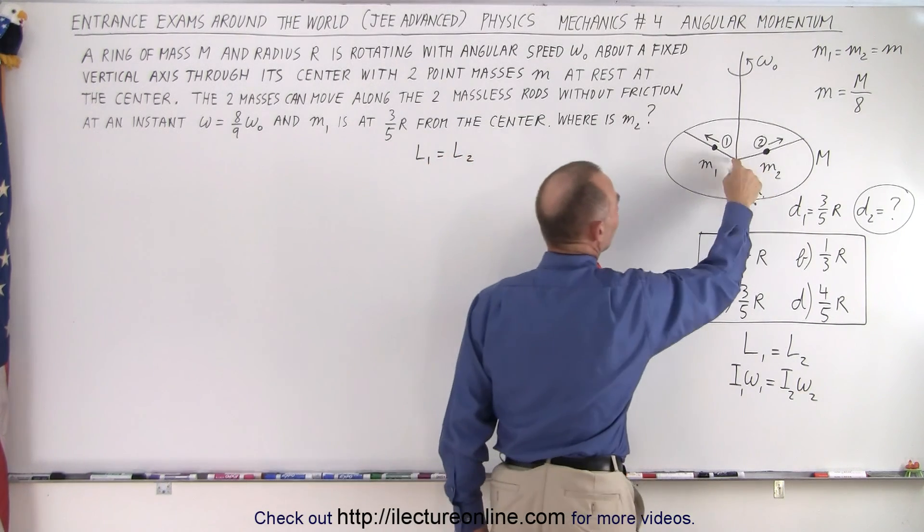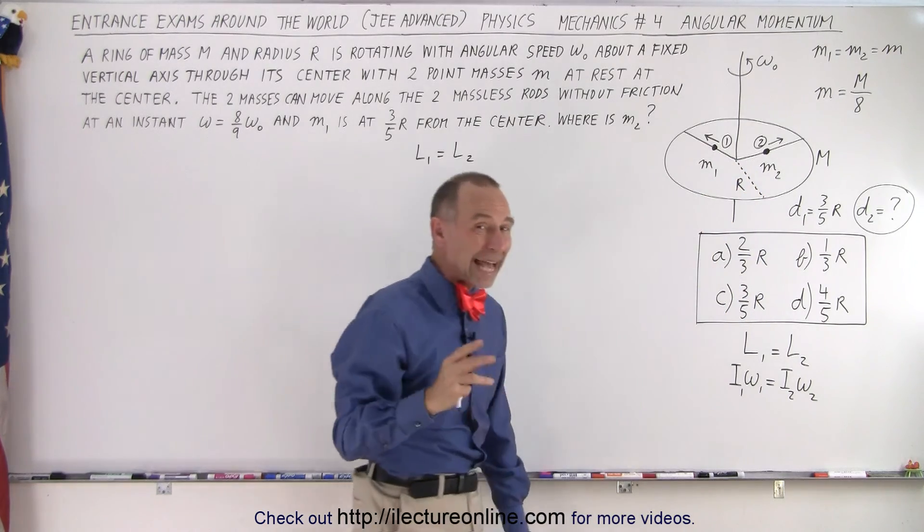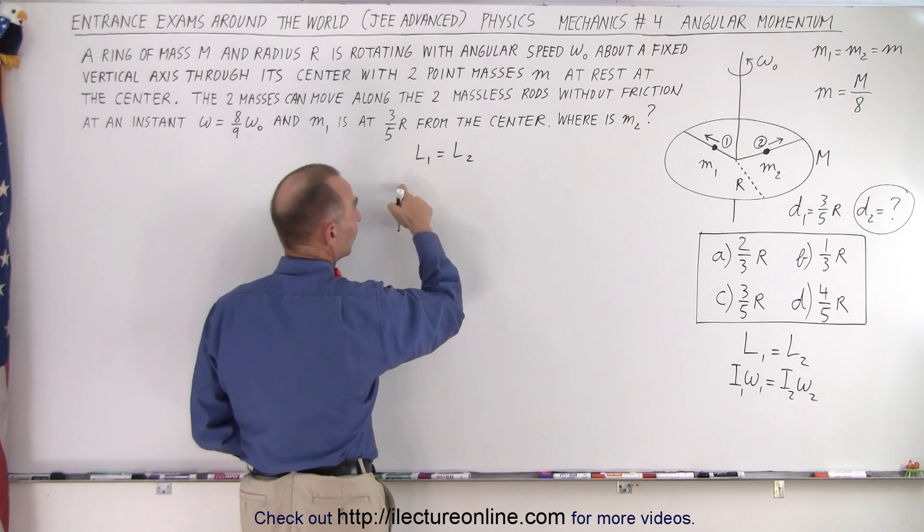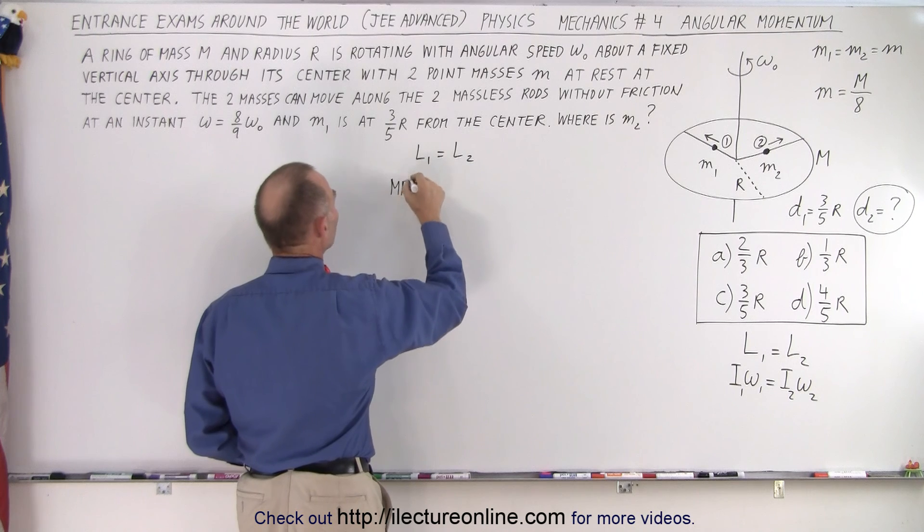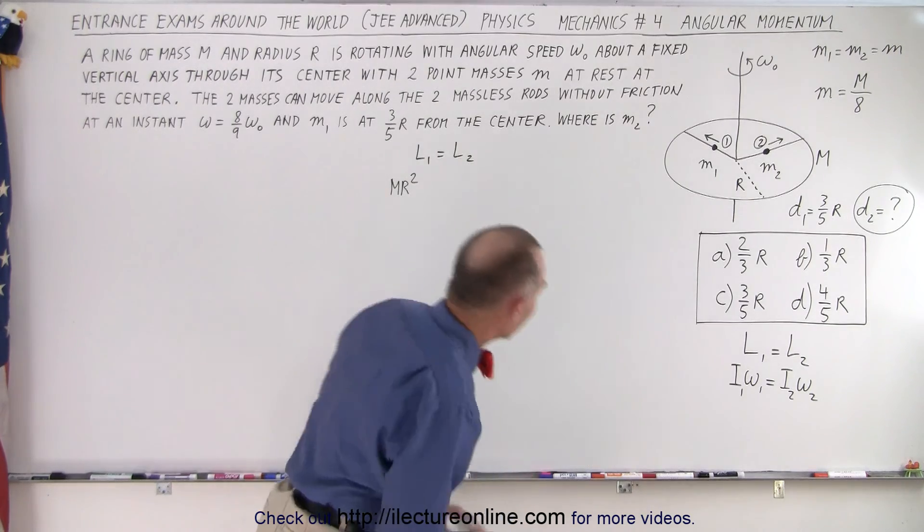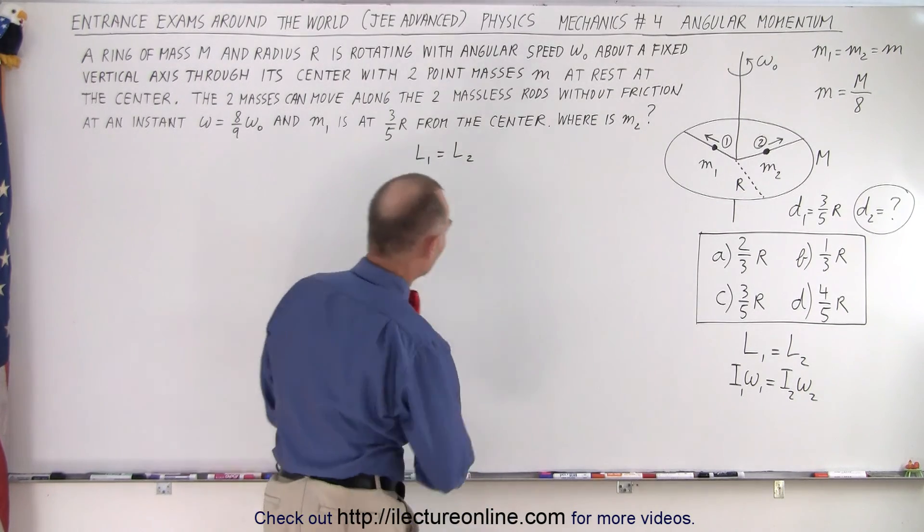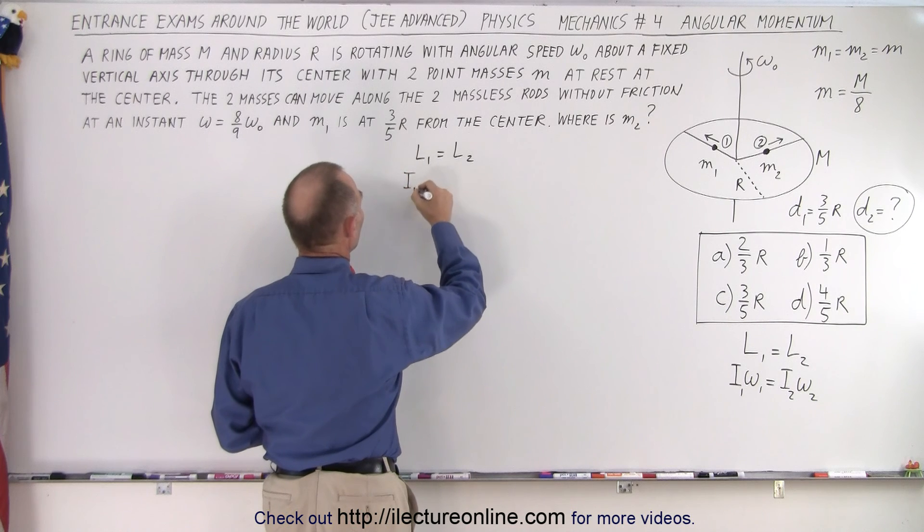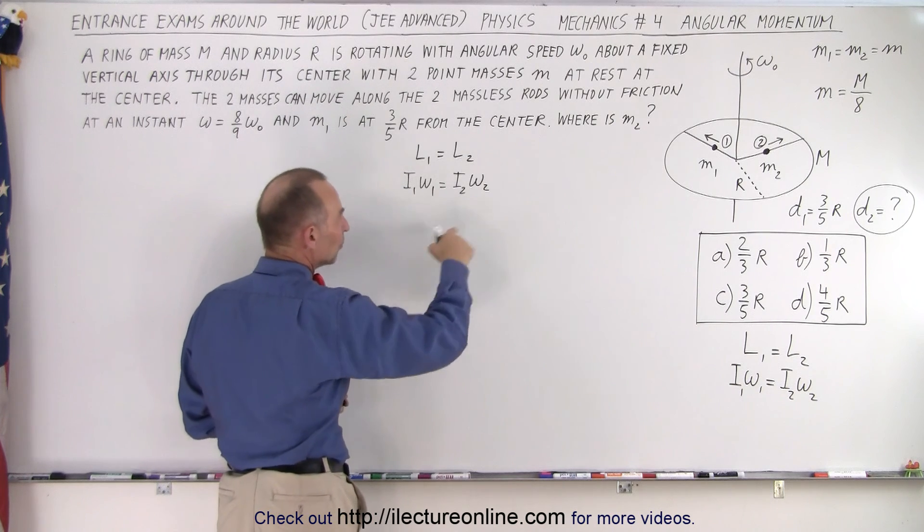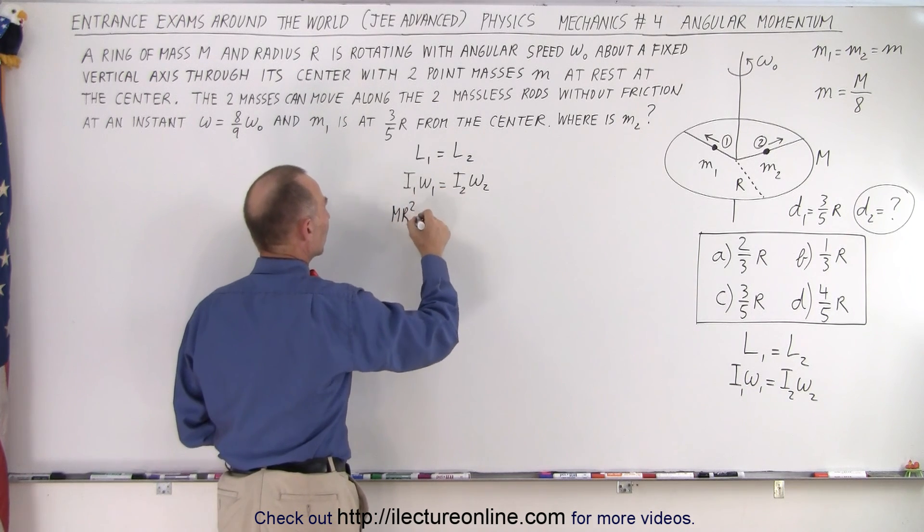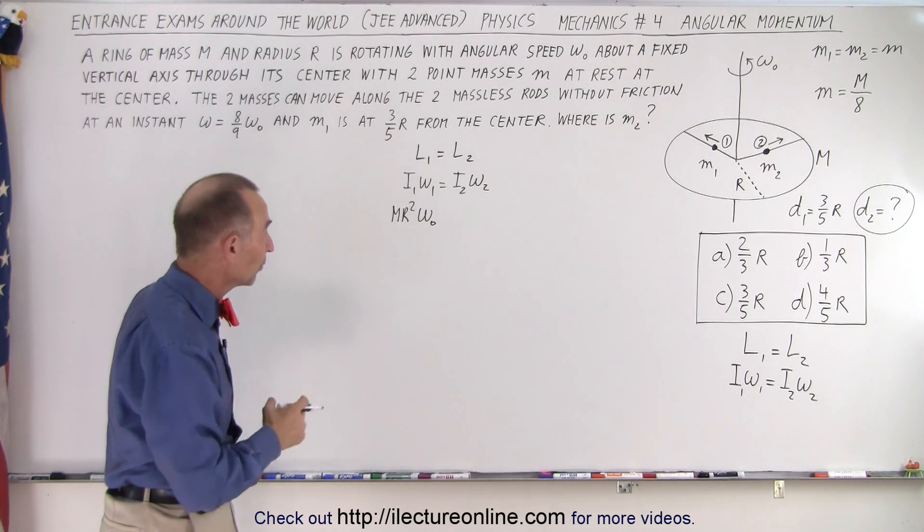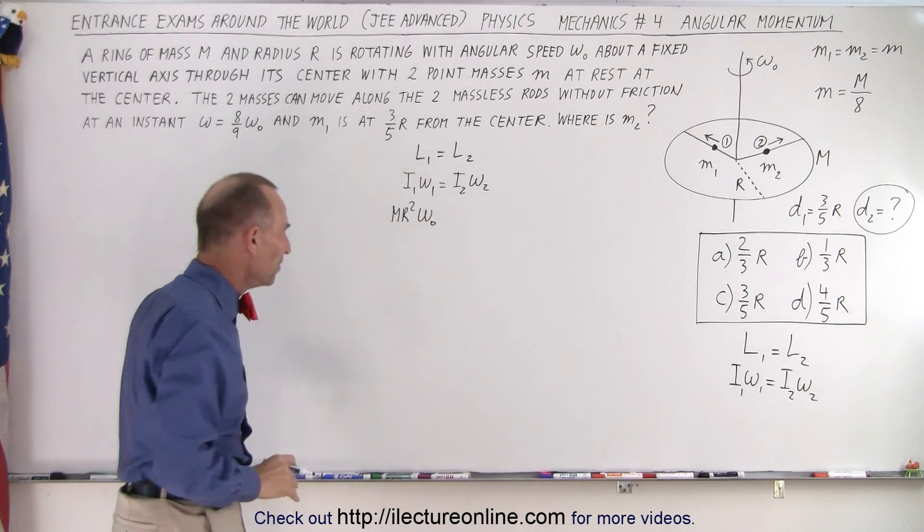First, the two masses are at the very center, so they do not add to the angular momentum of the system when at the center. The initial position is the moment of inertia of the ring. Let me put this in between: i1 omega 1 equals i2 omega 2. In this case, i would be the moment of inertia of the ring, which would be mr squared times the original omega. That would be the original angular momentum.